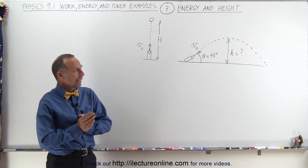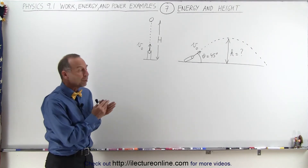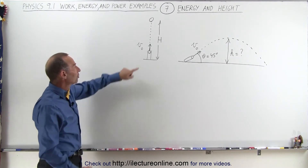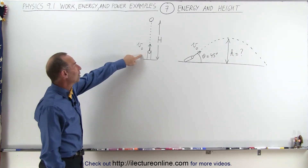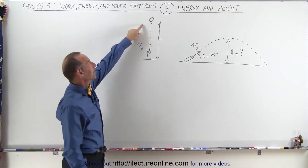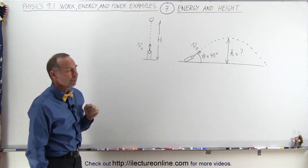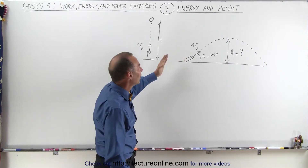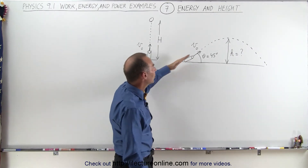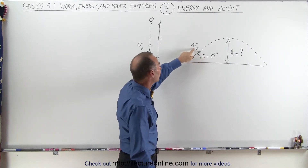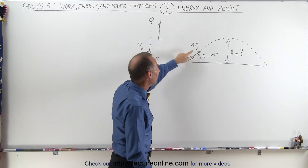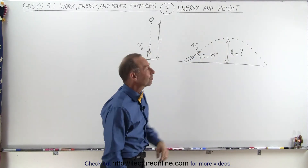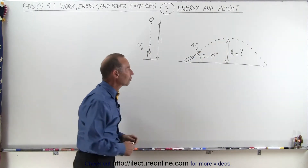Welcome to our lecture online. In this example we're looking at a projectile that's being shot straight up with some initial velocity and it reaches a height H before it comes back down. What happens if we take the same cannon, the same projectile, but now we shoot it at an angle of 45 degrees with the same initial velocity? What will be the maximum height it reaches when it comes to the top of its trajectory?